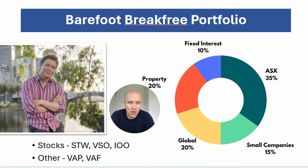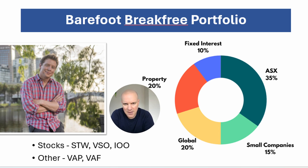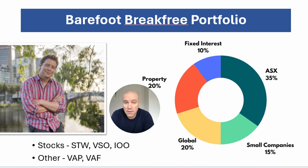Now, if you're an Australian and you've read a book on personal finance, it would be Scott Pape's book, The Barefoot Investor. He provided this investment strategy — a mix of Australian and international shares with a bit of property and fixed interest thrown in. You can replicate that using ETFs such as STW, VSO, IIO, VAP, and VAS. It's a well-structured portfolio, quite resilient to a number of different economic conditions, and probably best suited to those looking for a balanced, straightforward investment strategy based on Barefoot principles.